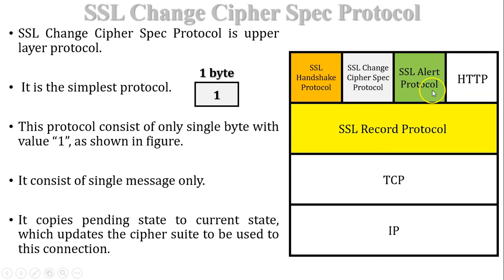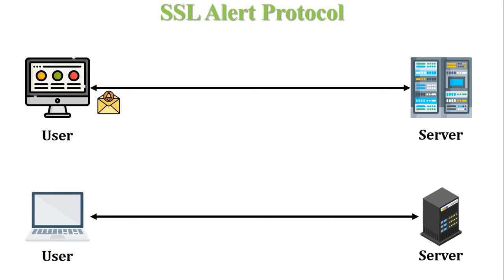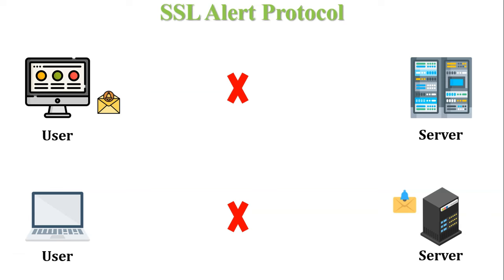The next higher layer protocol is SSL Alert Protocol. SSL uses the alert protocol for reporting errors decided by client or server. For example, when a user sends a message to the server and the server detects an error or warning in that message, the server sends an alert message to the user. Similarly, if the client detects an error in the server's message, the client sends an alert message to the server. If the error is serious, both parties terminate the session.